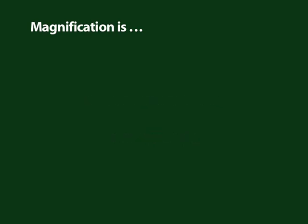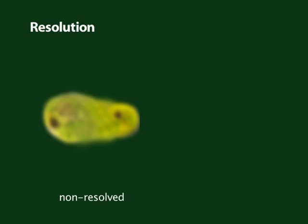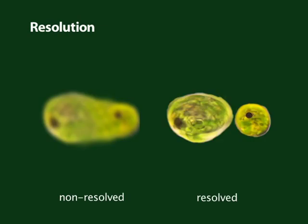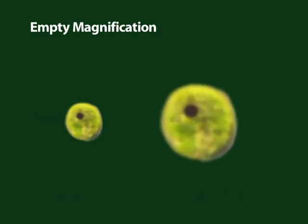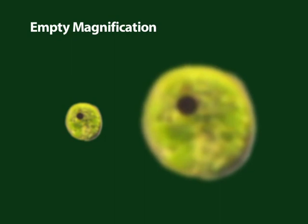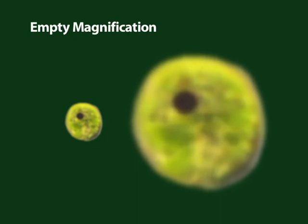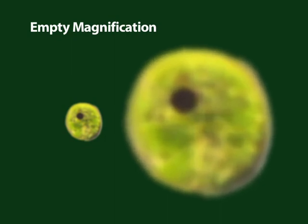An important aspect of magnification is resolution. Resolution is how close two objects can be located and still be seen as separate entities. If an increase in magnification only increases the size of an image without increasing the detail or resolution, this is called empty magnification.